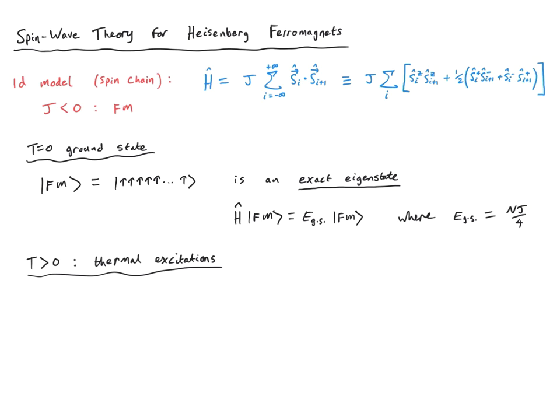At finite temperature T > 0, we get spin flip excitations. These are collective modes called magnons — similar to the collective lattice vibrations in crystals called phonons, but here we have magnetic collective modes. Like phonons, magnons are also quantized. The aim of this lecture is to understand these collective magnon modes: how they're quantized and what form they take in real space. This illustrates a common theme in condensed matter physics — we're not really interested in individual spin dynamics, but in the emergent collective modes.